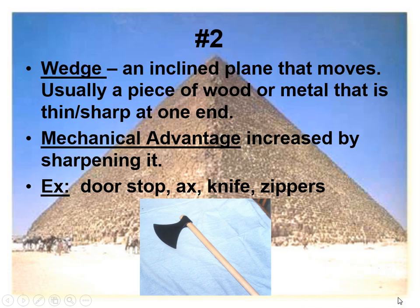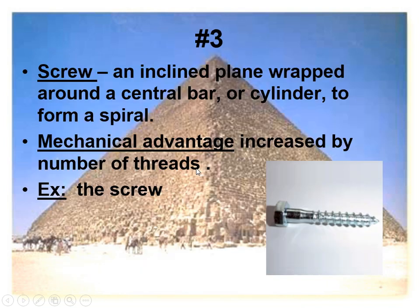The second simple machine is a wedge — it's an inclined plane that moves, and more importantly, one that is sharp on one end. The way you increase the mechanical advantage is to sharpen it. There are several examples you should definitely know. The third simple machine is a screw — an inclined plane wrapped around a central bar. You make it work better by increasing the number of threads. Rather than having five threads, you might use ten. The more threads it has, the more likely it is to stay in whatever you put it in.